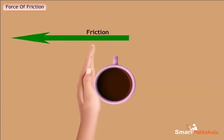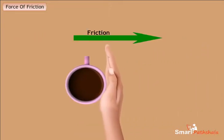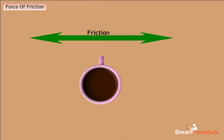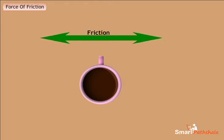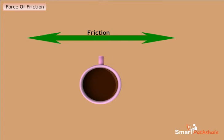If you apply the force along the left, friction acts along the right. If you apply the force along the right, friction acts along the left direction. In both cases, the force opposes the motion of the cup. The force of friction always opposes the applied force.